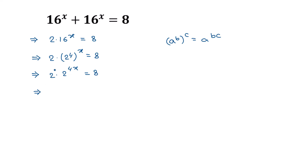Now 2 can be written as 2 to the power 1. Applying the exponential formula a to the power m times a to the power n equals a to the power m plus n, we get 2 to the power 1 times 2 to the power 4x, which can be written as 2 to the power 1 plus 4x. The right side 8 can be written as 2 to the power 3.